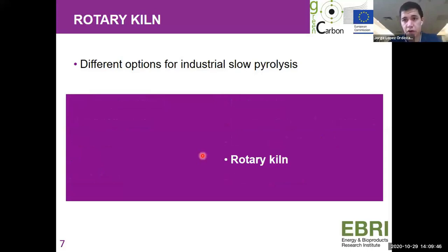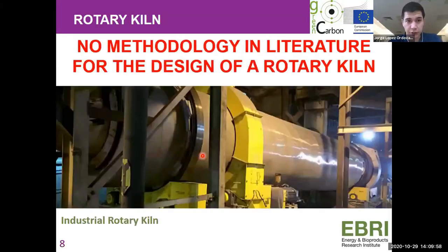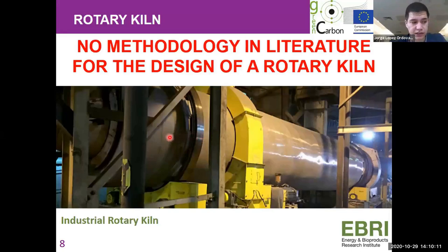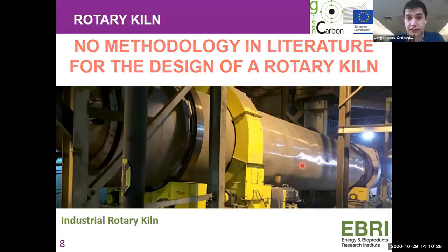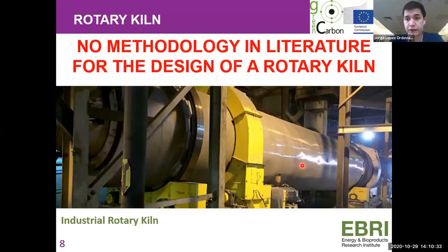After checking most of the properties and characteristics of these options, we decided the rotary kiln was the best option to produce char. However, it's a very complex process — we cannot let oxygen enter the reactor, so we need to properly seal the rotating part, and we have to study the behavior of the bed of solids inside accurately. The main motivation of this project is that there is no methodology in literature for the design of a rotary kiln for pyrolysis — there is information using differential equations but no simple, straightforward design methodology.